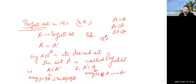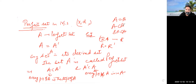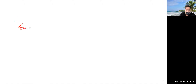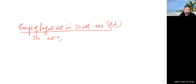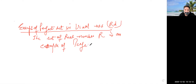For example, take R as the set of real numbers in the usual metric space. R is always equal to R-dash, so the set of real numbers is an example of a perfect set in the usual metric space.